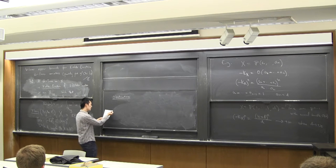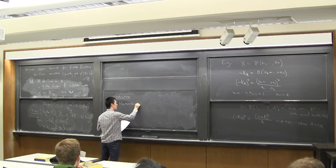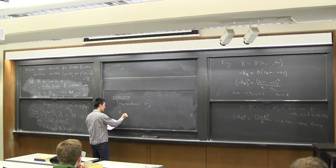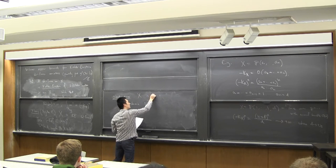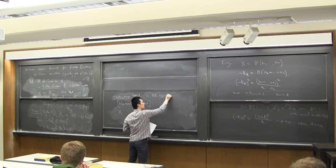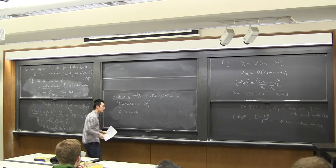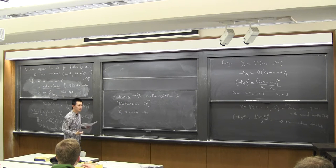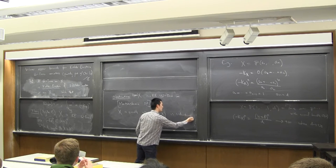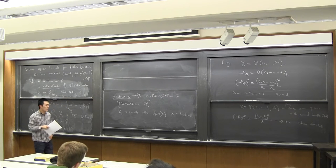The first obstruction in history was given by Matsushima in 1957. Assuming X is Kähler-Einstein and smooth, he showed that this imposes a restriction on the automorphism group: the automorphism group has to be a reductive algebraic group.